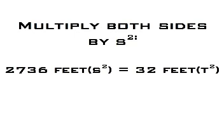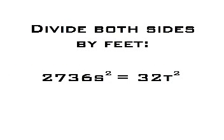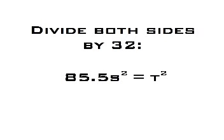The next step is multiplying both sides by seconds squared, giving us 2,736 feet times seconds squared equals 32 feet times t squared. After that, we divide both sides by feet, giving us 2,736 times s squared equals 32 times t squared. Dividing both sides by 32 gives us 85.5 times s squared equals t squared.